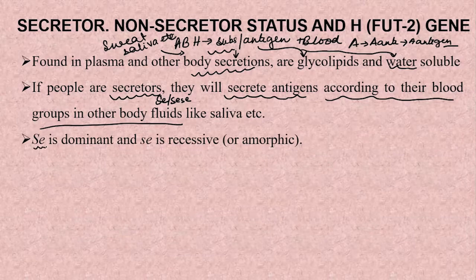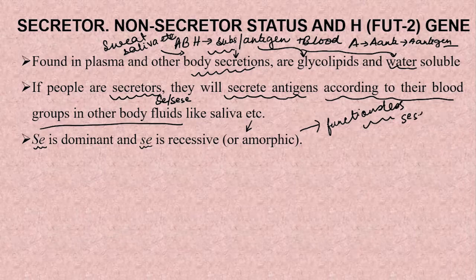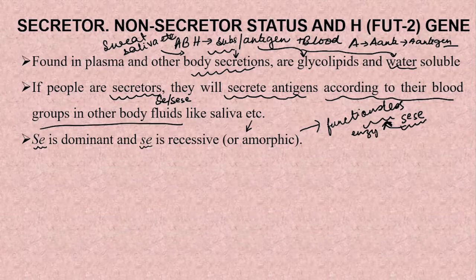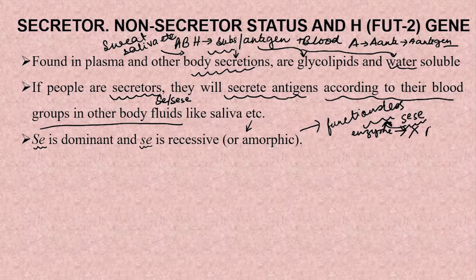If people are secretors — that is, if they are having the Se or Se gene — then they will secrete these glycolipid, water-soluble antigens according to their blood group in other body fluids. The capital Se is dominant over lowercase se, which is an amorphic gene. The amorphic gene is a mutant type of gene which gives rise to a functionless enzyme that is not causing the transport of any molecule onto the precursor chain.